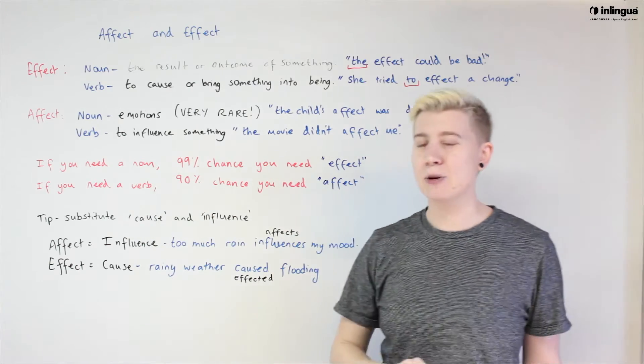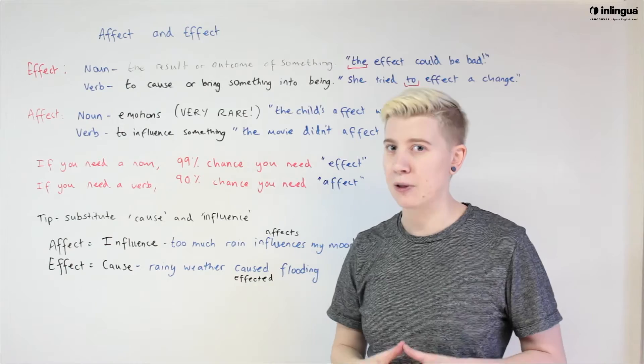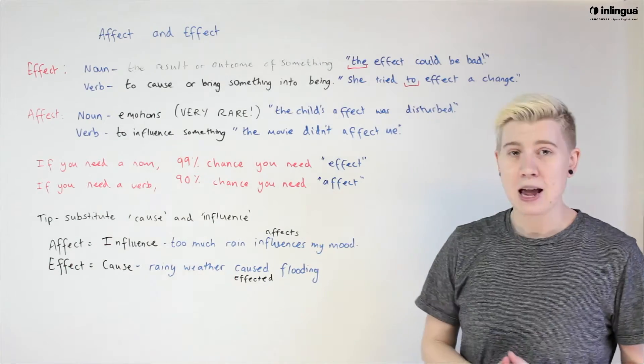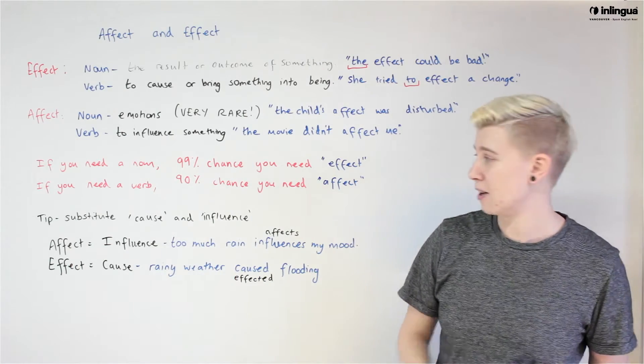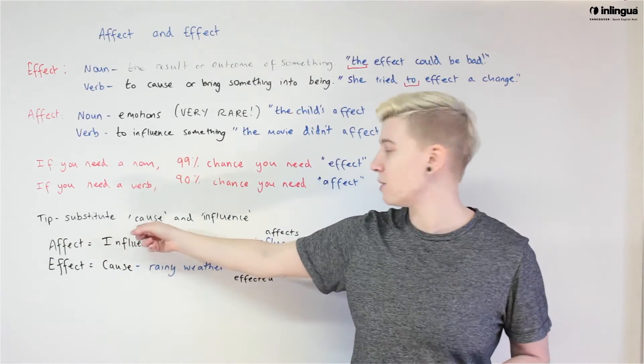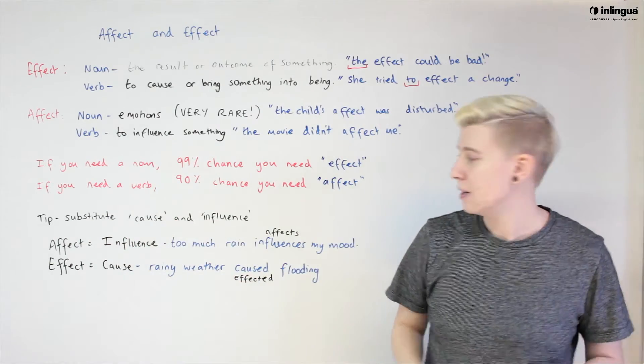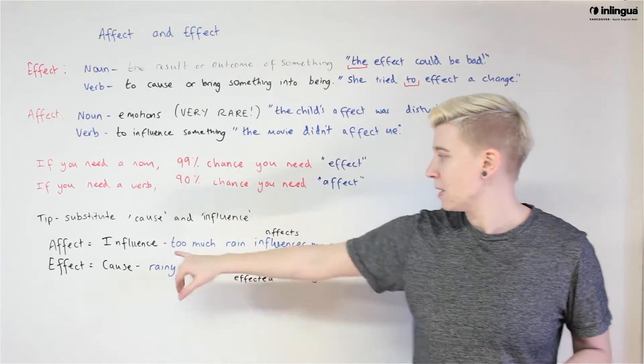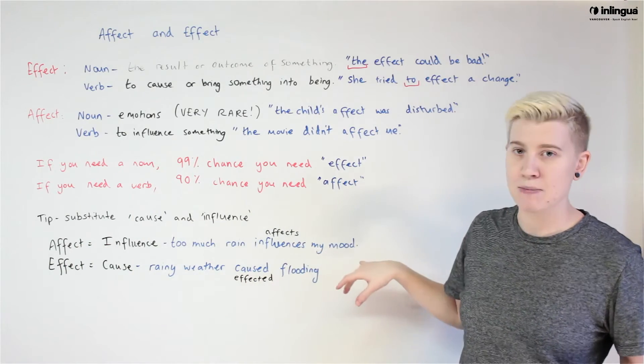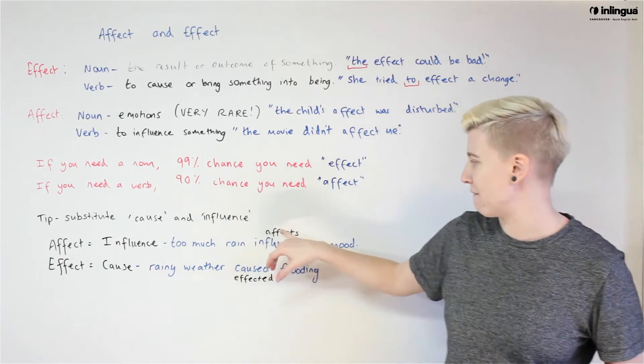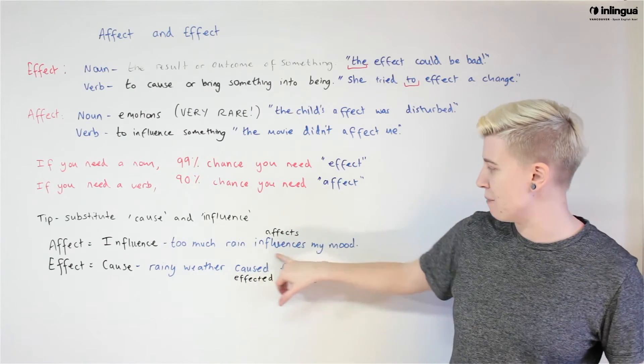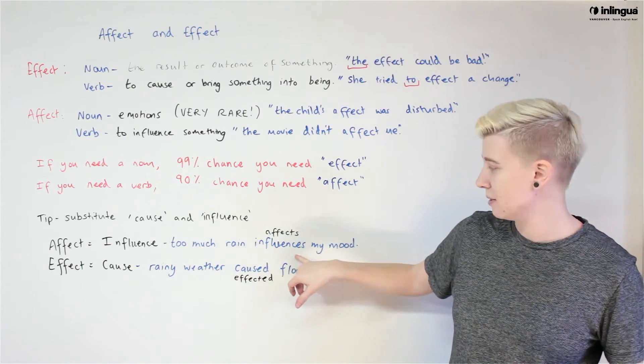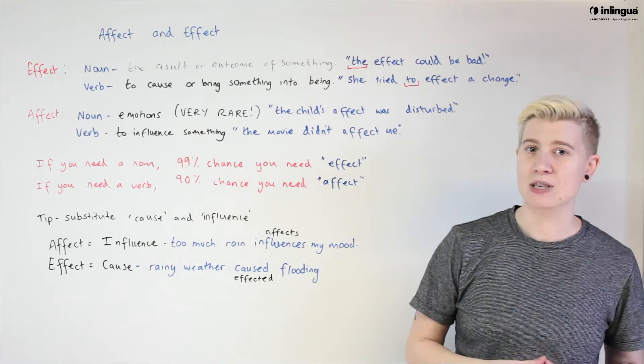If you want to get super fancy and really make sure that you're pinning it down, here is the top tip for that technique. We're going to substitute either the word cause or the word influence. With affect, meaning influence, we're going to swap in. Too much rain influences my mood. Too much rain affects my mood. So if the word influences fits here, we know we have to use affect.